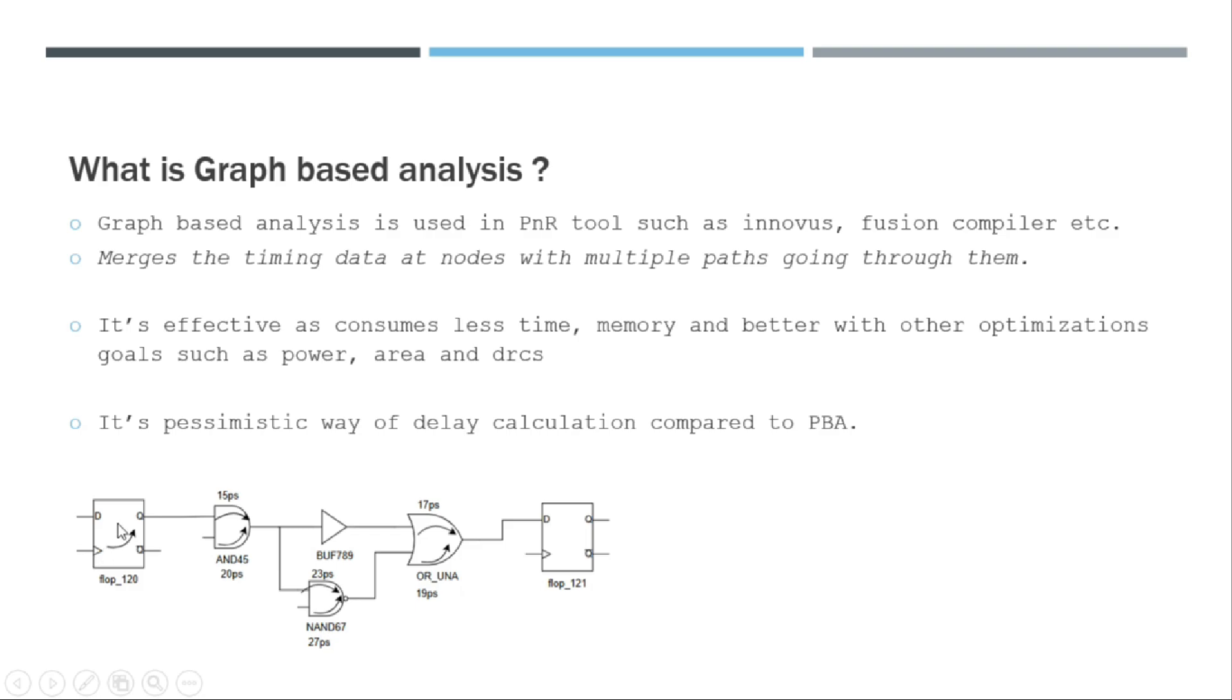Let's say it is trying to get the data path delay from flop 120 to flop 121, from Q pin of this to D pin of this one. In that case, it will not consider these instances as cells. The algorithms do not work the way it looks like this. It works like a graph. It actually converts this entire circuit into a graph and does the mathematical calculations based on that.